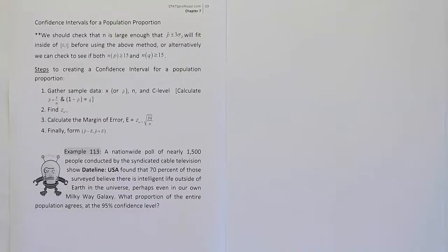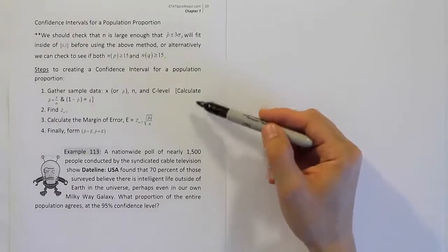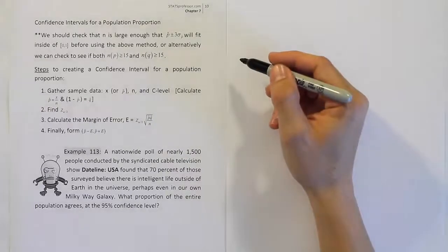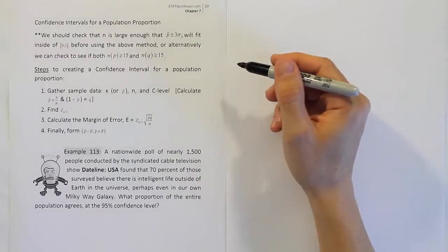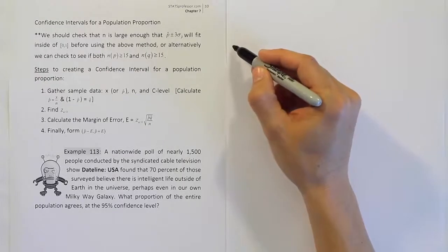So one way or another, you should realize that it's a proportion problem. And then from there we'll follow the four steps that I've given here above. Kind of the same four steps we used when we did the confidence interval for the mean.